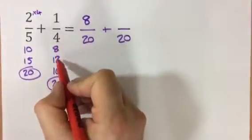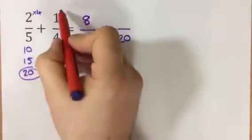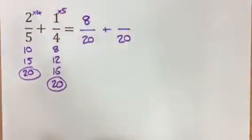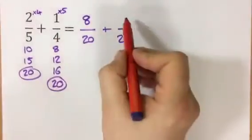20 here is the 1, 2, 3, 4, 5th multiple of 4, so we times the numerator by 5. 1 times 5 is 5.